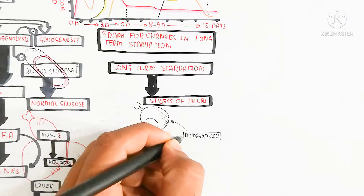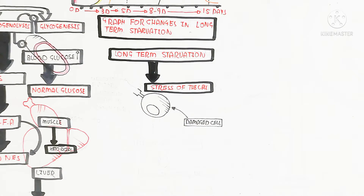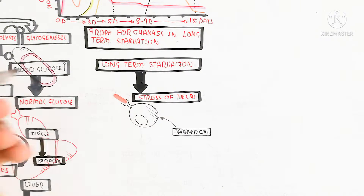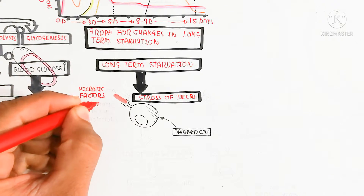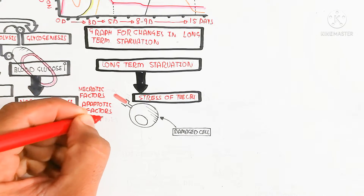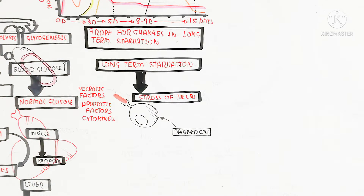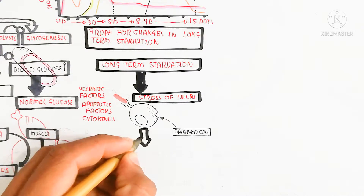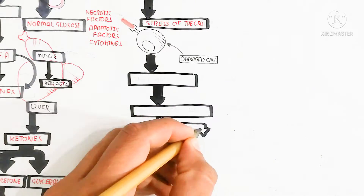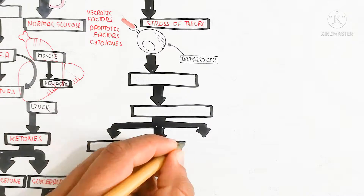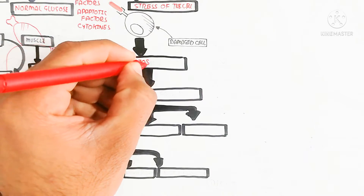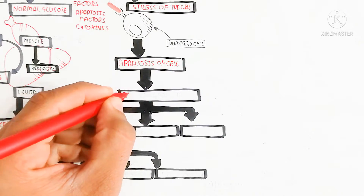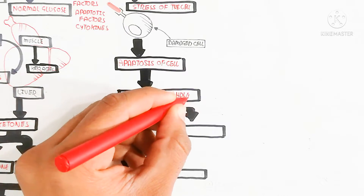This graph also shows changes in long-term starvation. Long-term starvation leads to cellular stress, while ketones serve as an alternate energy pathway for different muscles — they are lightweight compared to sugar and easy to metabolize. Necrotic factors, apoptotic factors, and cytokines are involved; cellular stress due to starvation can lead to apoptosis and cell death. If the cell is not damaged, it will further repair and grow.